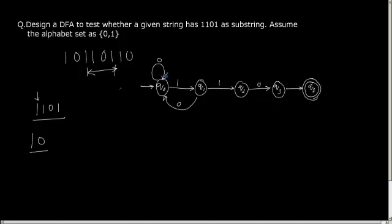So if I am in q0, I get a 0, I should remain in q0 as it does not take me towards the final state. Similarly, if I am in q1 and I get a 0, I should go back to q0 because 1 0 does not belong to the substring 1101.